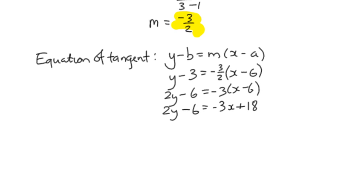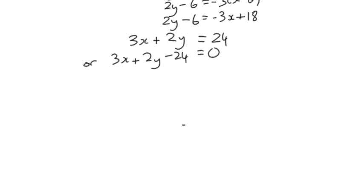And we can arrange it in whatever way seems to work. If we add 3x to both sides, we end up with 3x plus 2y, we could have the numbers on the right-hand side so that would become 24, or we could write it as 3x plus 2y minus 24 equals 0. Either way, that would be fine for the equation of a tangent, and we can say that that's our answer, equation of a tangent at 6, 3.